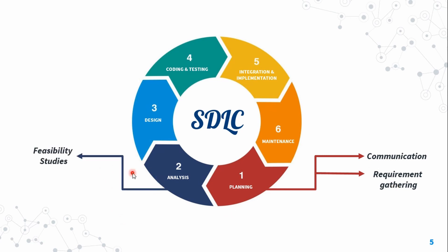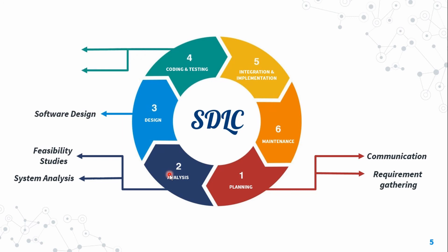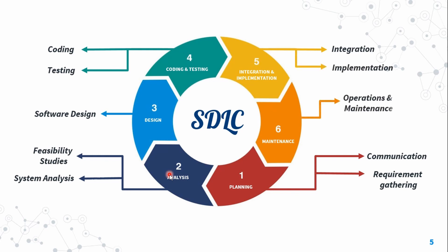The stages of SDLC include: Phase 1 — Analysis and feasibility study; Phase 2 — Requirements processing; Phase 3 — Software design; Phase 4 — Coding and testing; Phase 5 — Integration and implementation; and Phase 6 — Operation, maintenance, and disposition.